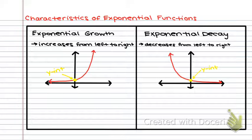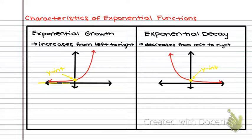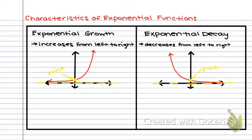I did not cross the x-axis, and one of the really cool things about exponential functions is that there will always be a line that your graph gets closer and closer to but does not cross. In this specific case, it's our x-axis — same thing on the decay graph. That line that it gets closer and closer to is called an asymptote.